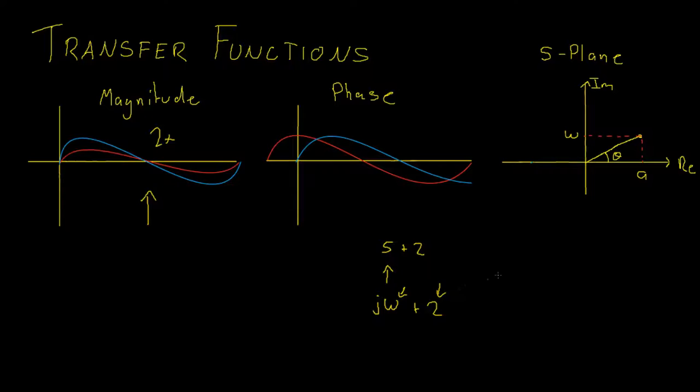Therefore, we have an imaginary component of omega and a real component of two. If we were to plot this on our S-plane graph, we could think of the magnitude as the hypotenuse of the right-angled triangle that omega and our two real value would make up.